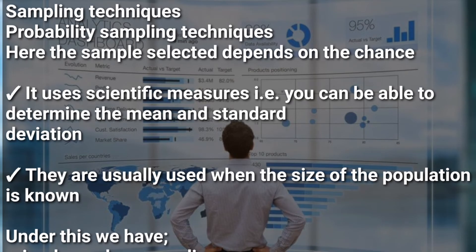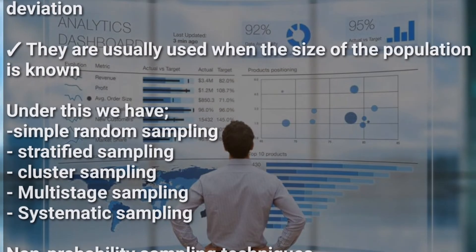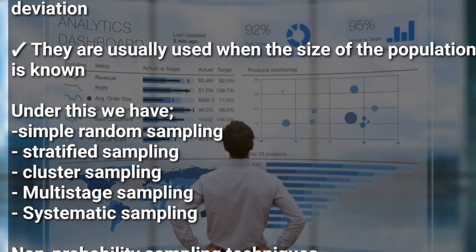Let's now look at the sampling techniques. We have two sampling techniques: probability sampling and non-probability sampling. Under probability sampling, the sample selected depends on chance. It uses scientific measures — for example, you can determine the mean and standard deviation. Probability sampling is usually used when the size of the population is known. Under probability sampling techniques, we have five methods: simple random sampling, stratified sampling, cluster sampling, multi-stage sampling, and systematic sampling.